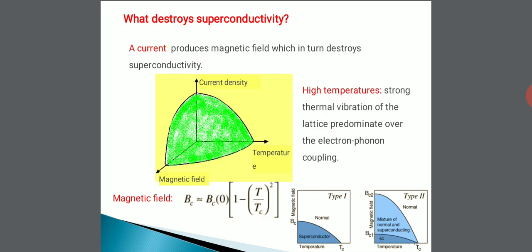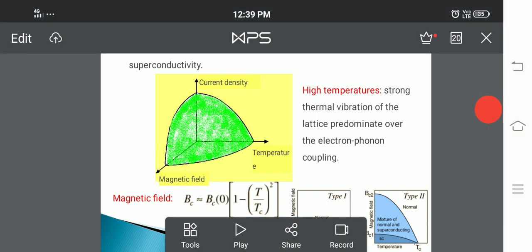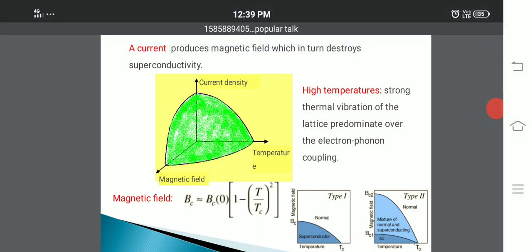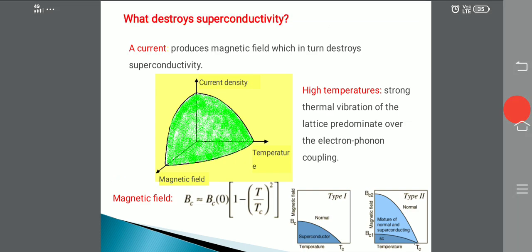Similarly, temperature. Strong thermal vibrations of the lattice predominate over the electron phonon coupling. So if you apply high temperature, the superconductivity will be lost. And there is a formula for the magnetic field.